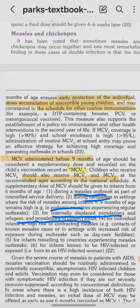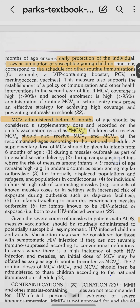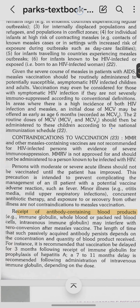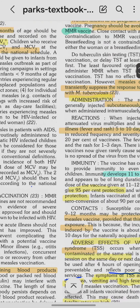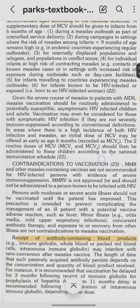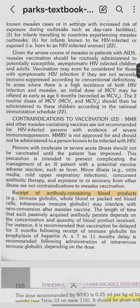Contraindications to measles vaccination include: being a recipient of antibody-containing blood products, being in a severely immunocompromised state, pregnancy, and severe acute illness. Persons in any of these conditions should not receive the measles vaccine.